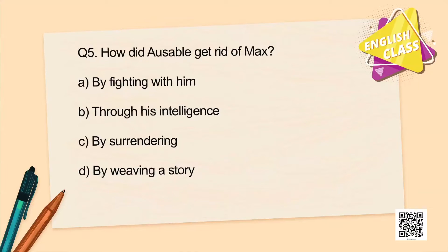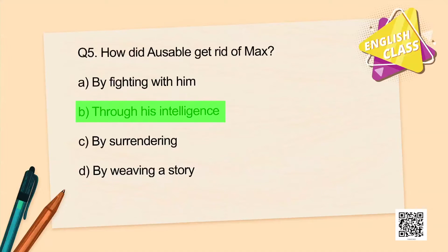Question number five: How did Ausable get rid of Max? By fighting with him, through his intelligence, by surrendering, or by weaving a story? He was able to get rid of Max through his intelligence and by weaving a story — so both options B and D would be correct.